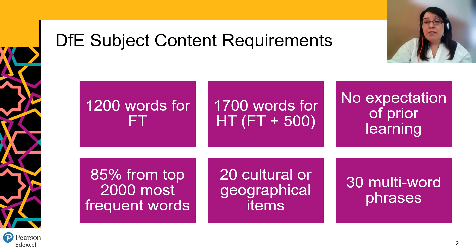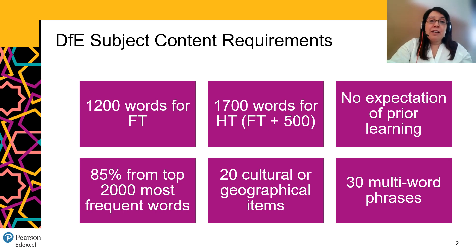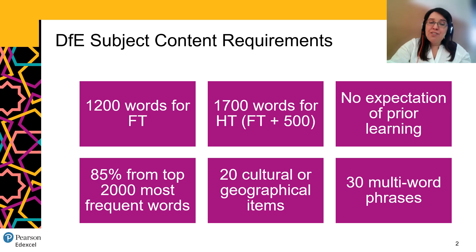That means that of the 1,200 words at foundation tier, 180 of those words could come from outside the top 2,000. And for the higher tier, 255 words could come from outside the top 2,000. But as we've already chosen 180 for foundation tier, that's actually only another 75 for the higher tier. To give you some context, in French the words for birthday, restaurant, and present are all outside the top 2,000 — so you start to get a sense of the task we had in carefully selecting those 180 or 255 words outside the top 2,000.